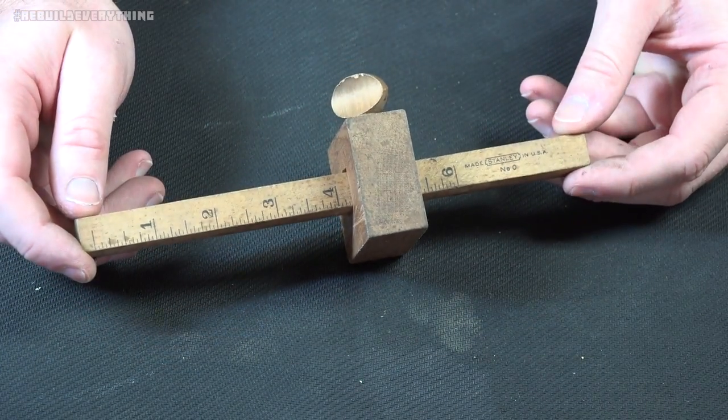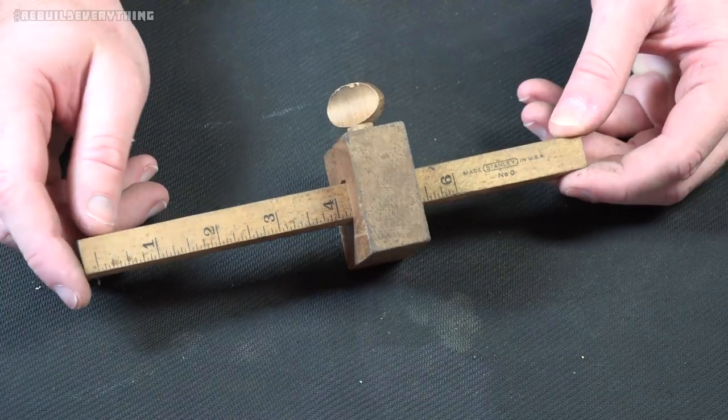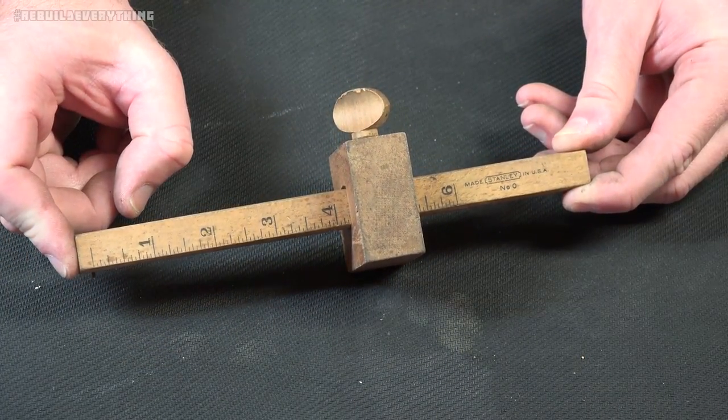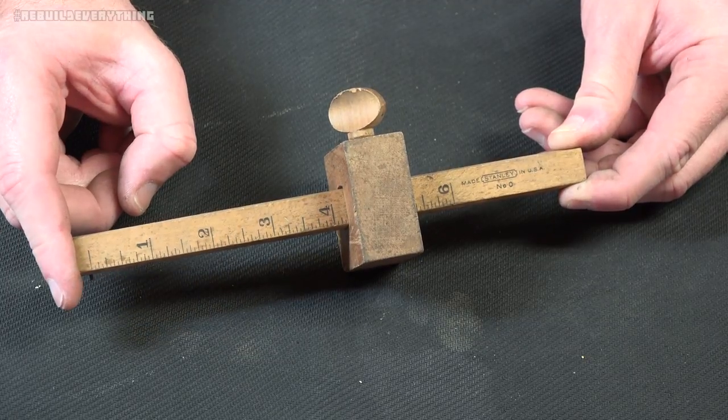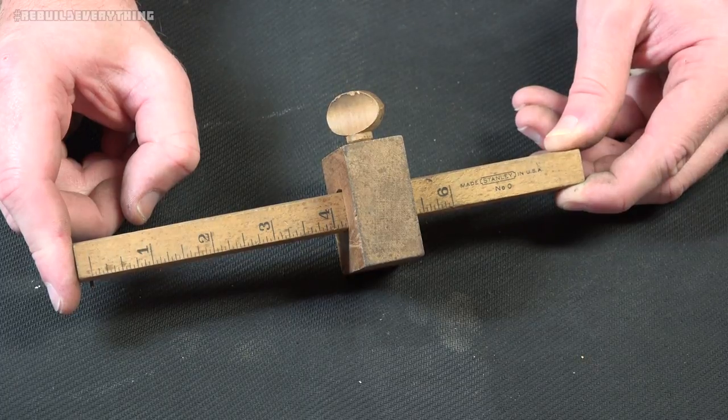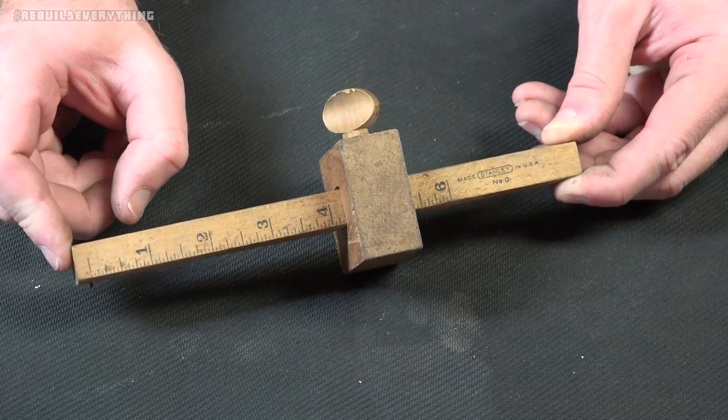The problem being when I researched a number zero, everything I got was a level. I could not find any depth gauges or anything like that on the Stanley number zero, so that left me a little confused. It's a six-inch long piece marked in sixteenth-inch increments.